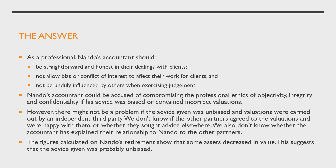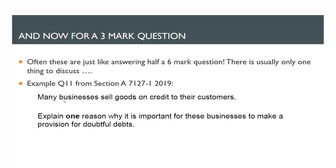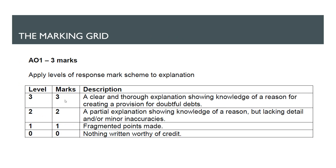But you can equally say there really isn't enough information here to make an informed decision without talking to the other partners and their accountants. Whatever you do, make a judgment and make sure it is justified. So — three mark questions. Often these are just like little six mark questions, just half of one. There's often only one thing to discuss. It's usually in section A and it's more to do with just explaining something. The example in this 2019 paper was question 11 in section A, which said that many businesses sell goods on credit to their customers — explain one reason why it's important for these businesses to make a provision for doubtful debts. What we're aiming to do with the marking grid is get a clear and thorough explanation showing knowledge of a reason for creating a provision for doubtful debts.